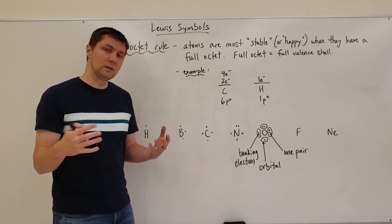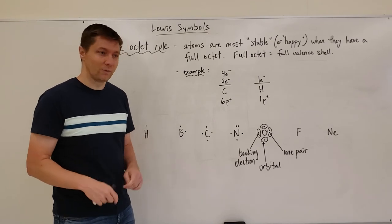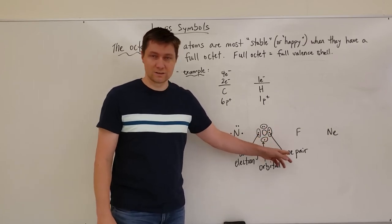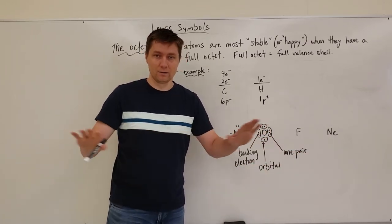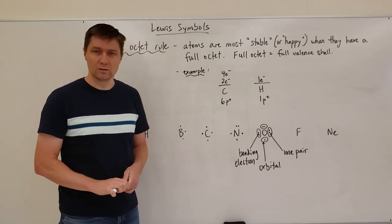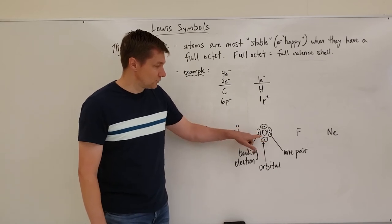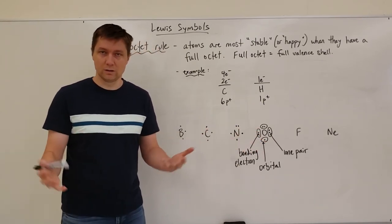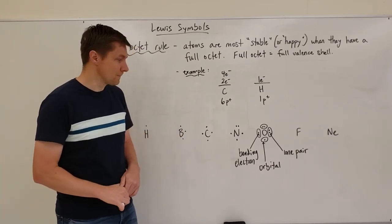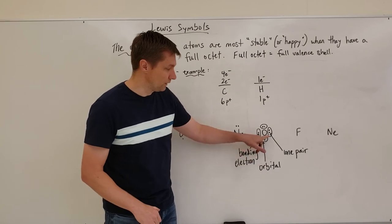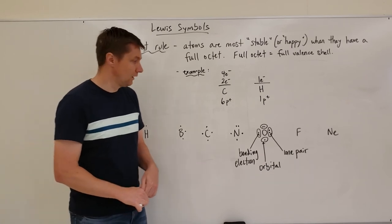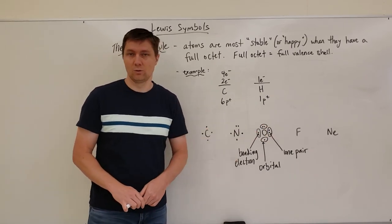These electron arrangements have meaning and perform different things based on their nature. The electrons that are paired up are called lone pairs — they are not involved in bonding at all. The single electrons are called bonding electrons and are obviously involved in bonding. Each orbital is simply a place where electrons can exist, and each orbital can hold a maximum of two electrons.